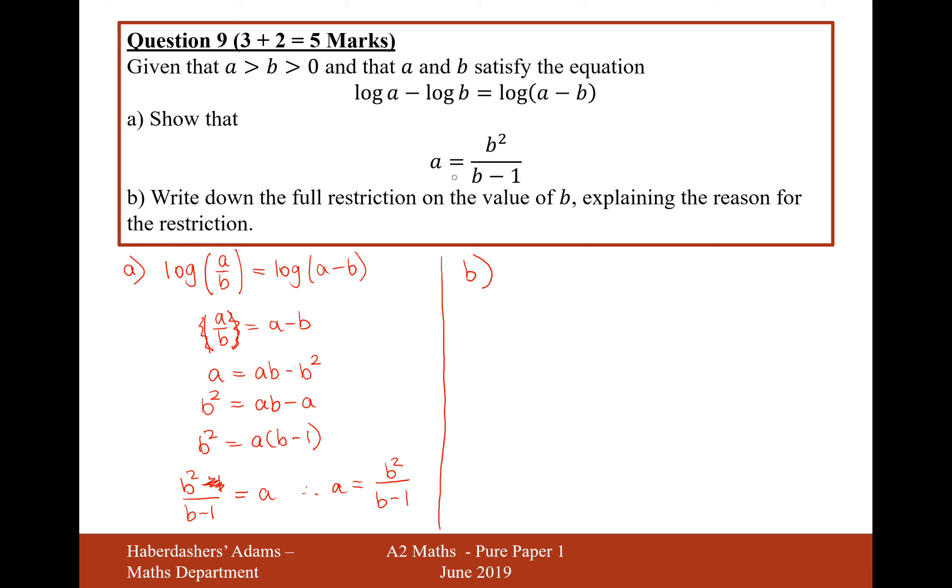Okay, so looking at this, we want a to be positive. Now b is definitely going to be positive as well. So for a to be positive, b should also be greater than 1.